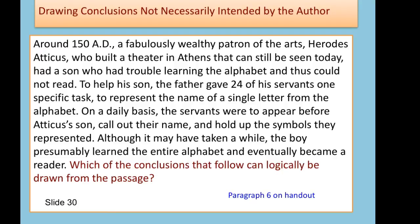Let's look at this example. Around 150 AD, a fabulously wealthy patron of the arts, Herodes Atticus, who built a theater in Athens that can still be seen today, had a son who had trouble learning the alphabet and thus could not read. To help his son, the father gave 24 of his servants one specific task: to represent the name of a single letter from the alphabet. On a daily basis, the servants were to appear before Atticus' son, call out their name, and hold up the symbols they represented. Although it may have taken a while, the boy presumably learned the entire alphabet and eventually became a good reader.